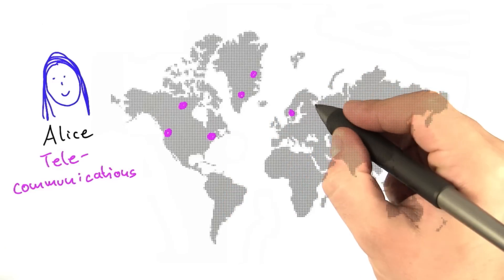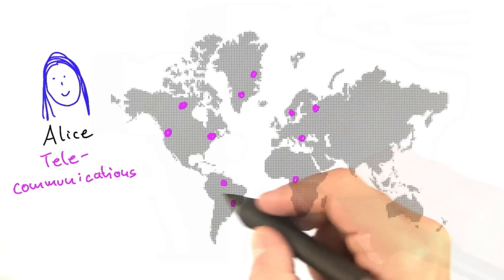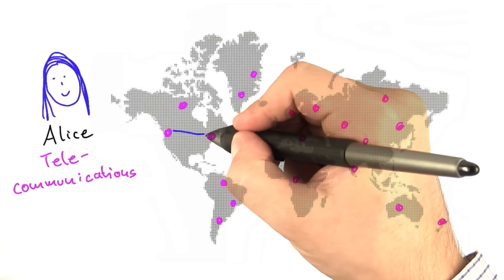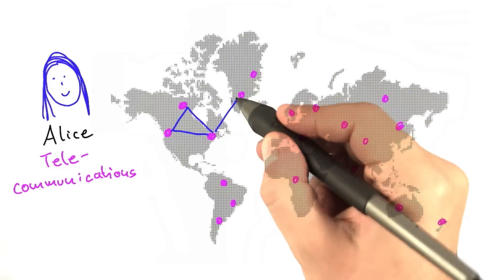This is just to give you an idea. In reality, the network is much larger. But they basically have telecommunications centers that are spread out around the world, and these communication centers are connected through cables, something like this.